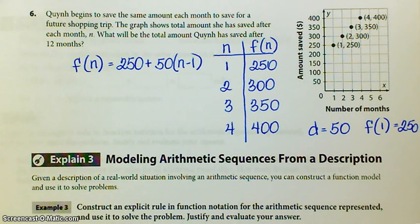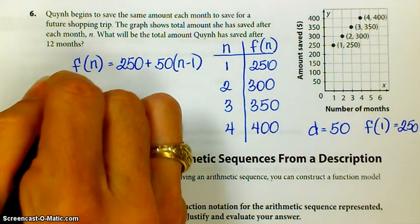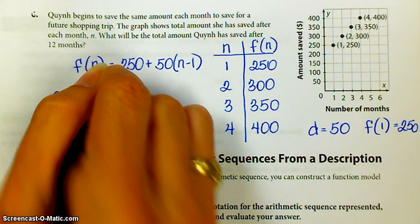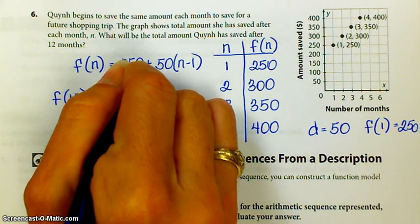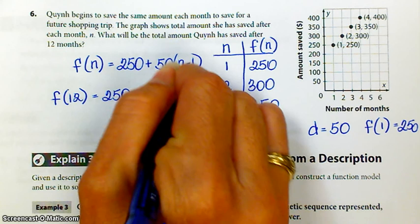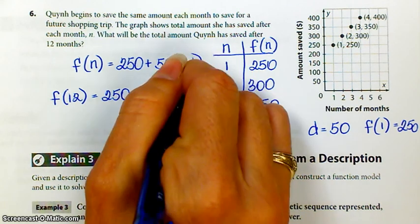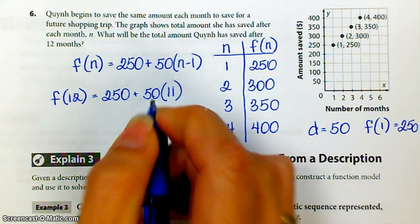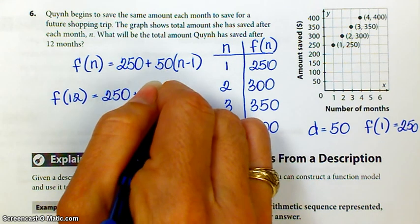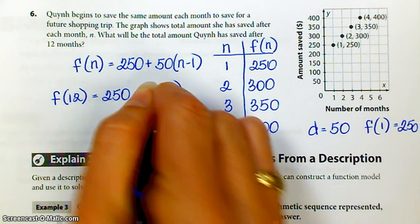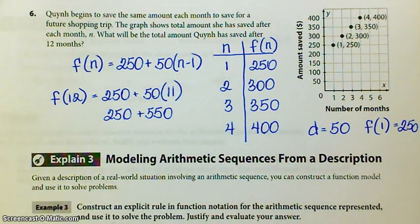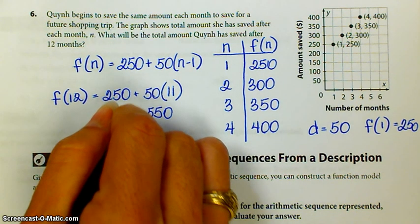So what will the total amount be after 12 months? So we're finding F of 12, 250 plus 50 times 12 minus 1, which is 11. 11 times 5 is 55. So 11 times 50 is 550. And 550 plus 250, last time I checked, was 800.